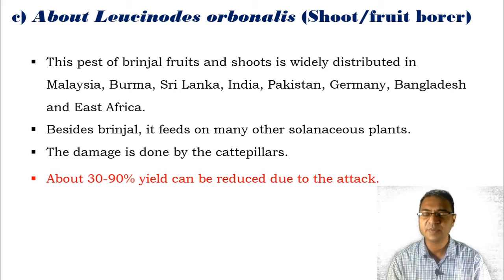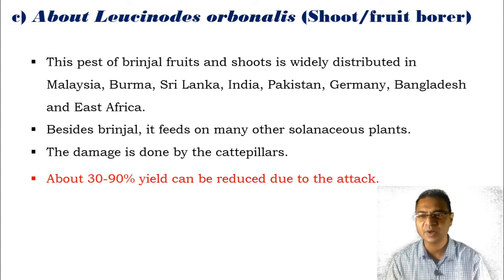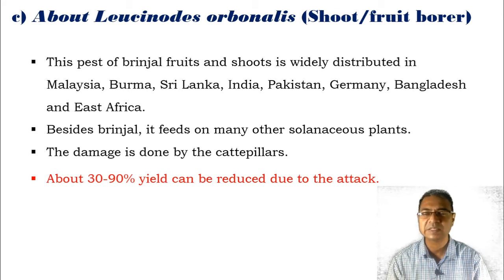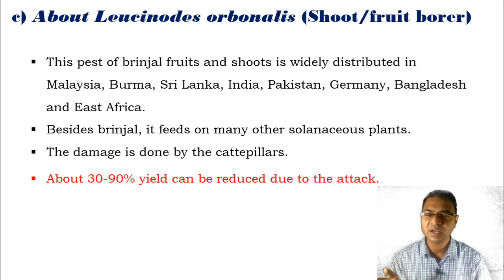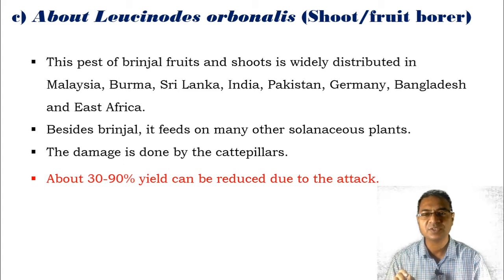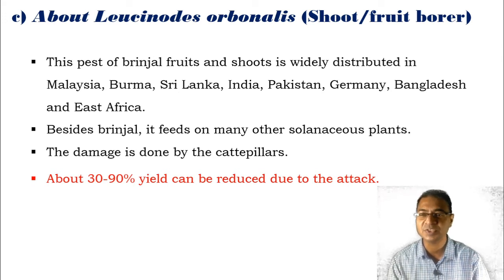This pest of the brinjal fruit is widely distributed all over the world, especially in Malaysia, Burma, Sri Lanka, India, Pakistan, Germany, Bangladesh, and East Africa. Besides brinjal, it feeds on many other plants, especially those of the family Solanaceae. The damage is done by the caterpillar, and around 30 to 90 percent of production is declined by Leucinodes orbonalis.